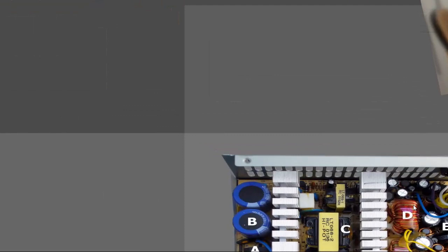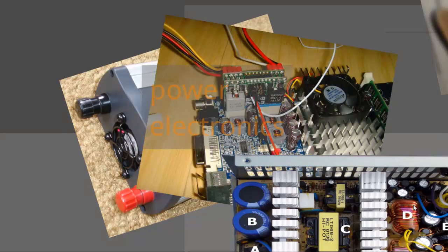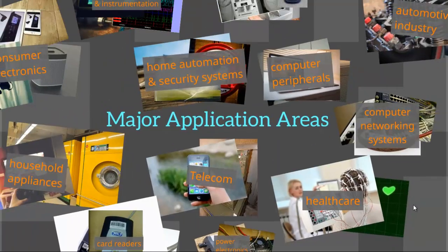Another major area where embedded systems are used is power electronic applications, like inverters, switch mode power supplies, motor control, etc. These were just a few areas where embedded systems are used. With over billions of microcontrollers sold in the world, it doesn't come as a surprise that we are surrounded by our silent friends everywhere.